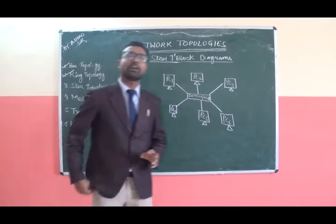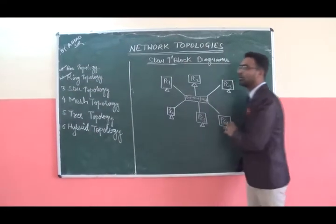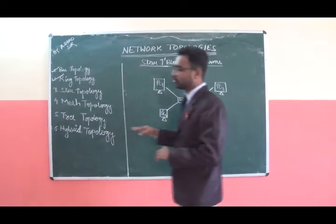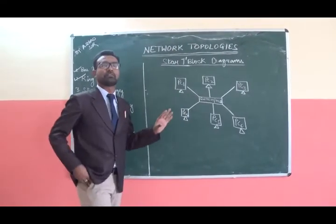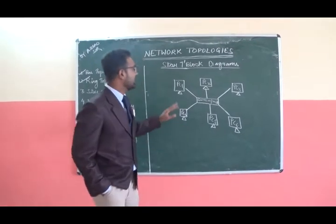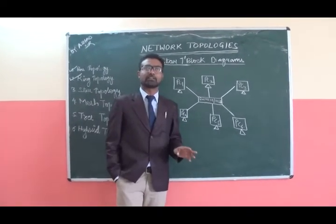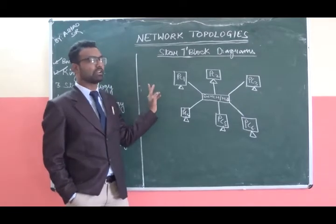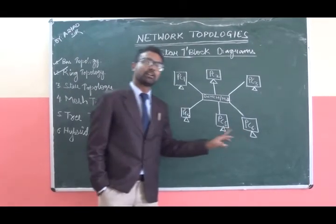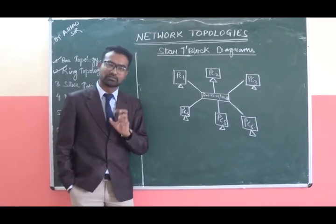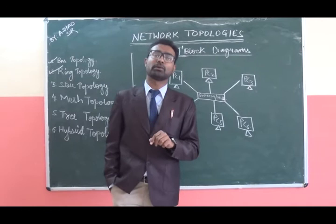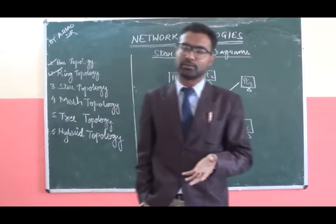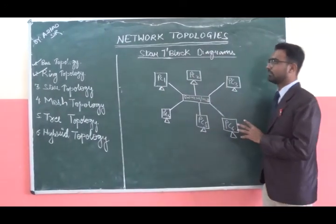In star topology, we are going to talk about the connection and how computers are connected with the help of one switch or hub. This is the most feasible and very common type of network connection topology where every PC is connected to every other single PC. For example, if PC1 wants to share or send some message to PC6, it is very easy through this type of topology. Unlike ring topology where one PC had a link or connection to only two other PCs, here that limitation does not exist.